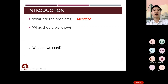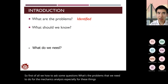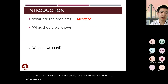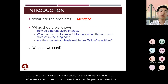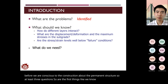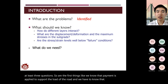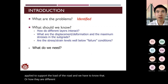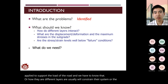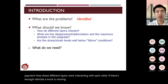First, we need to ask some questions about what problems we need to address for the mechanics analysis before construction of the pavement structure. The first question is how the different layers interact with each other when vehicles and trucks are moving on the road, since we consider the pavement as a layer system.